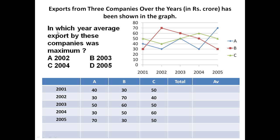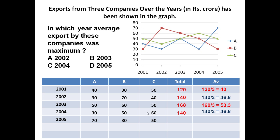Now, in which year was the average export by these companies maximum? In 2001, export by A was 40, B was 30, C was 50. If you add these 3 you get 120; 120 divided by 3 — because 3 companies are there — so average is 40. Similarly in 2002, you add these 3: it is 140, divided by 3 is 46.6. In 2003: 160 divided by 3 is 53.3. In 2004: 140 divided by 3 is 46.6.